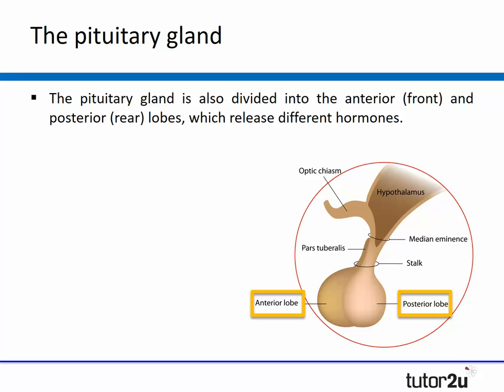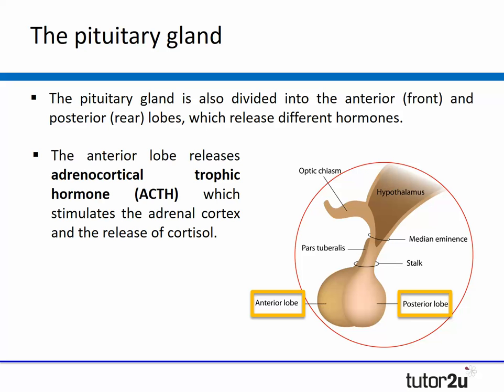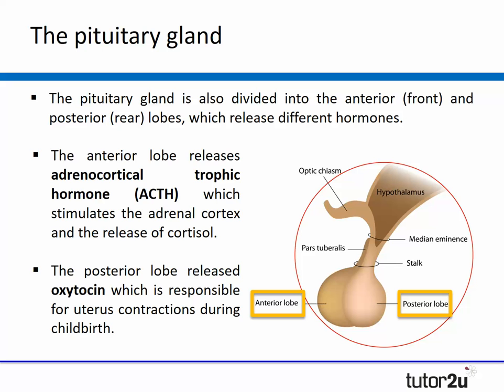Both lobes release a different hormone. A key hormone released from the anterior lobe is the adrenocorticotrophic hormone, ACTH, which stimulates the adrenal cortex to release cortisol during the stress response — if you study stress as an optional topic you'll learn more about this. A key hormone released from the posterior lobe is oxytocin, often known as the love hormone, which is responsible for uterus contractions during childbirth. Research also suggests that levels of oxytocin increase when you cuddle someone you love.